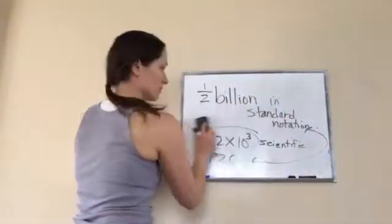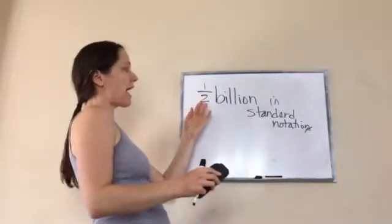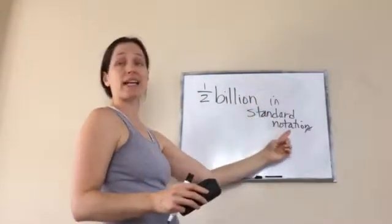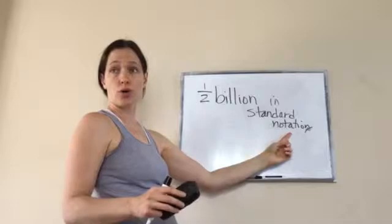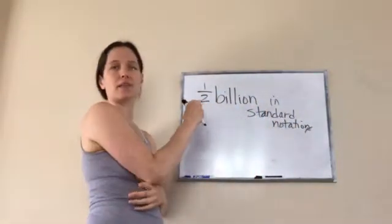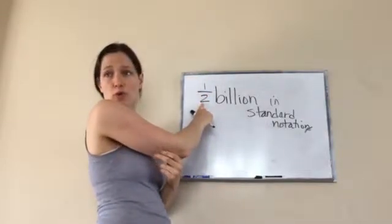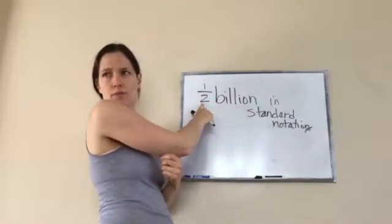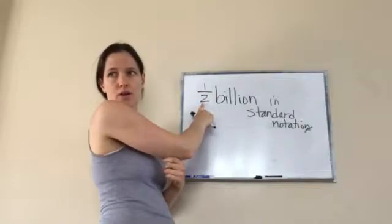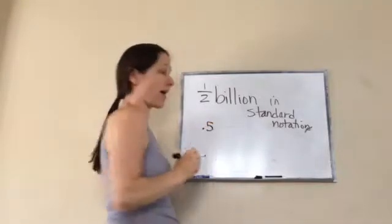So, they want us to take one, I'm sorry, half billion and they want me to write it as a number. So, what you're going to do, what is a, this is the easiest way to do this. What is a half in a decimal form? Do you know? What is half? Decimal like 0.5. 0.5, yes.